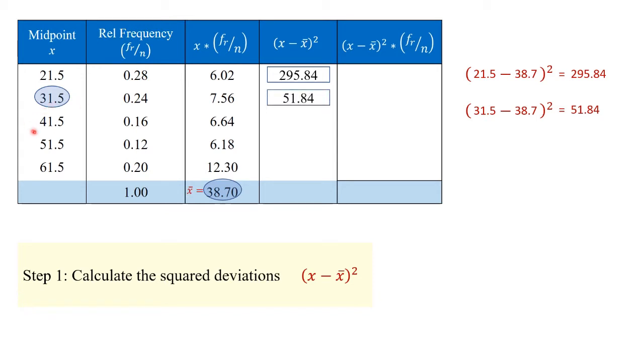Next, we take the third group, midpoint value of 41.5, subtract once again 38.7, square this number, this deviation from the mean, and it gives us 7.84.